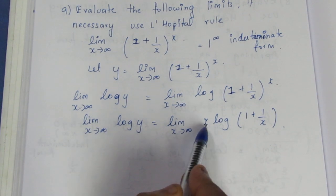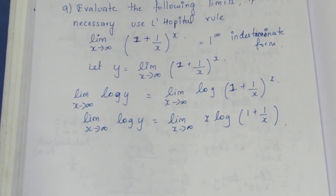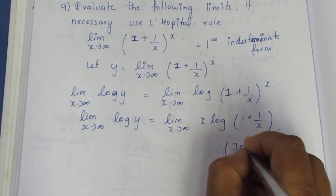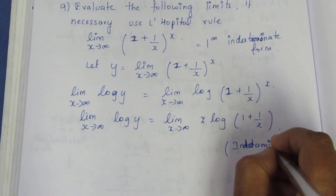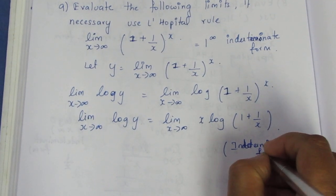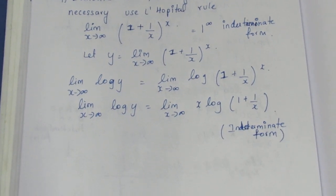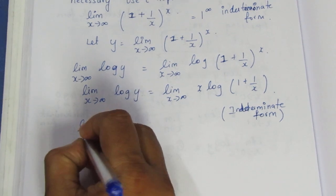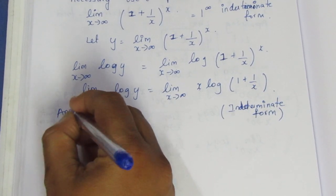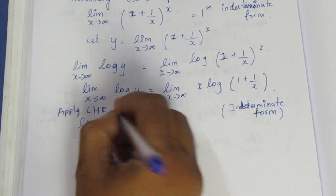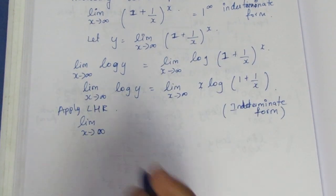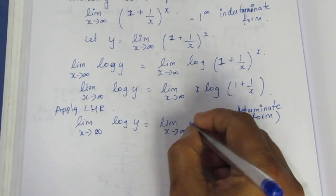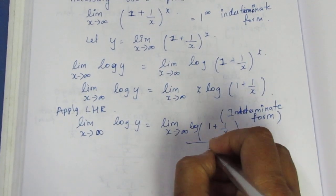Now, applying infinity into any number will give infinity, so this will equal infinity into log, which is an indeterminate form. So what do we do now? We can use the multiply rule — we convert and apply the L'Hôpital rule. So x tends to infinity: log y equals limit x tends to infinity of log(1 plus 1 by x) divided by x to the power minus 1.